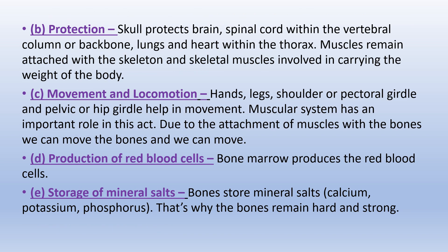Protection: The brain is protected within the skull, the spinal cord within the vertebral column or backbone, and the lungs and heart within the thorax. Muscles remain attached with the skeleton and skeletal muscles are involved in carrying the weight of the body. Hands, legs, shoulders or pectoral girdle, and pelvic or hip girdle help in movement. Due to the attachment of muscles with the bones we can move the bones. Bone marrow produces red blood cells. Bones store mineral salts, which is why the bones remain hard and strong.